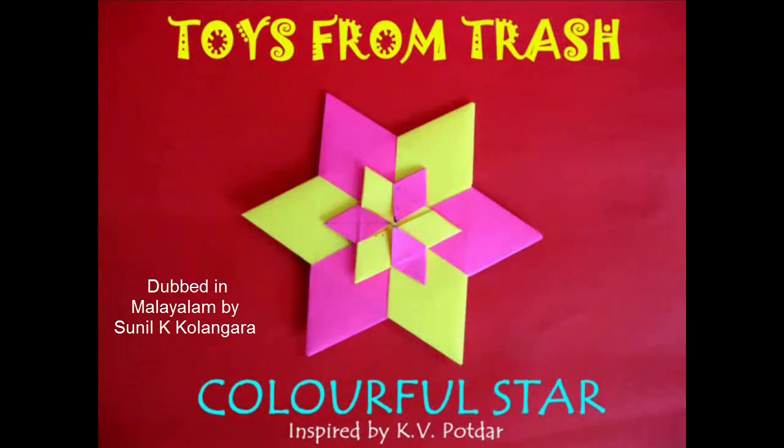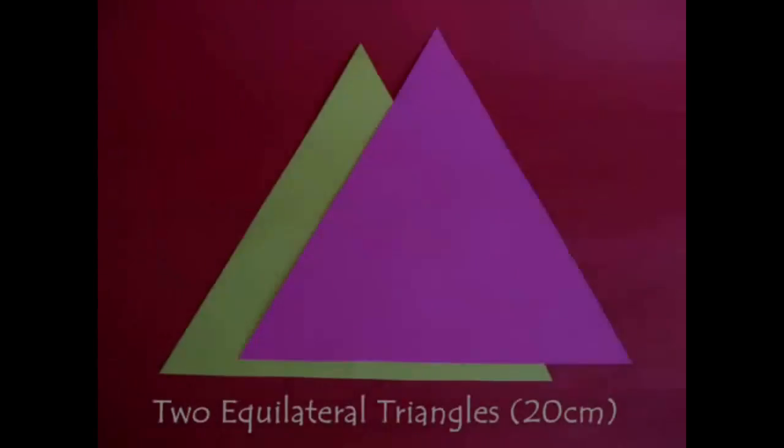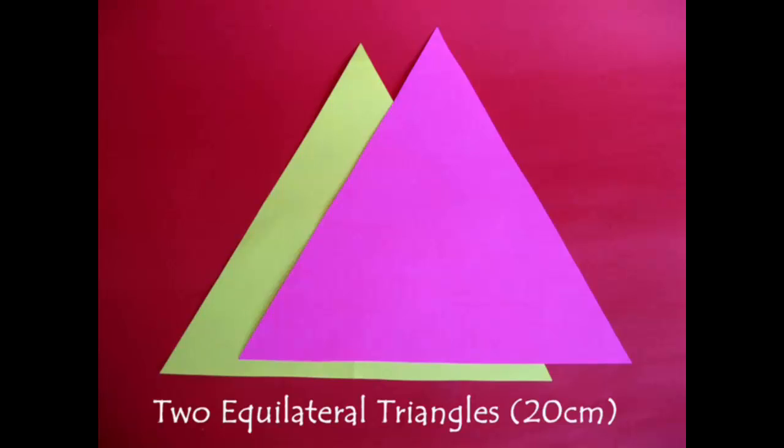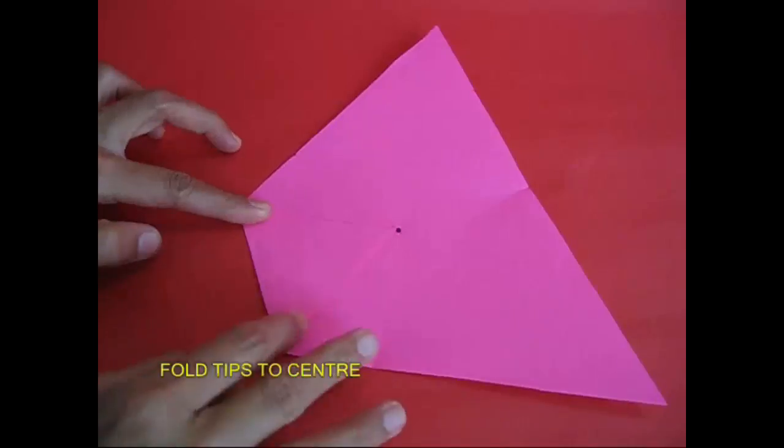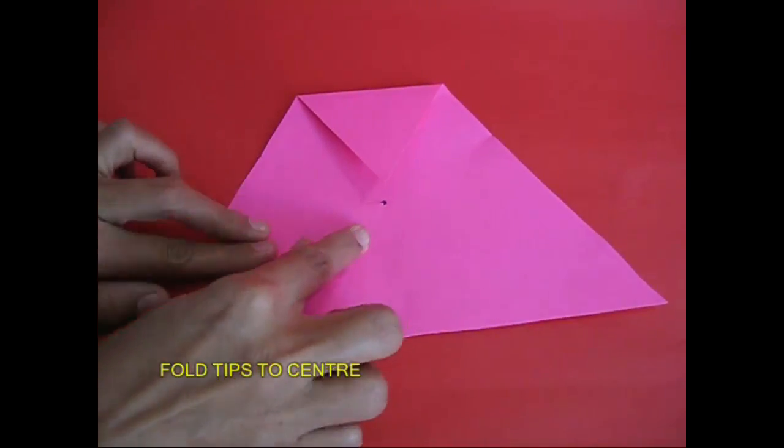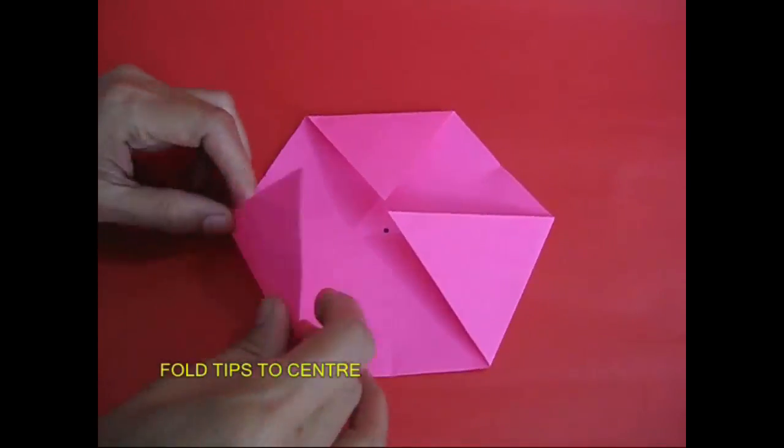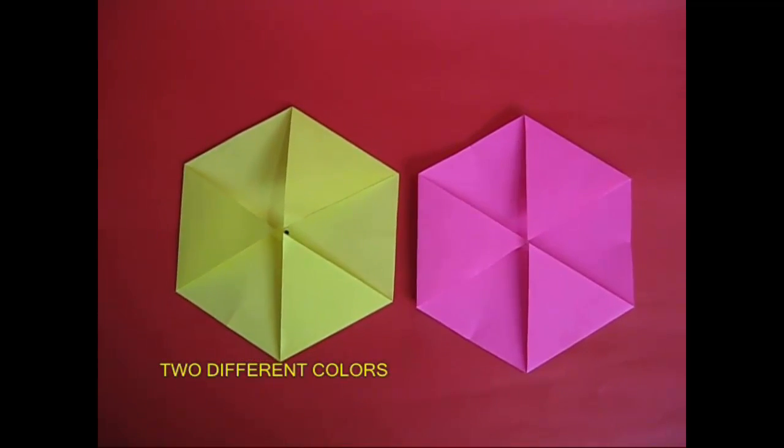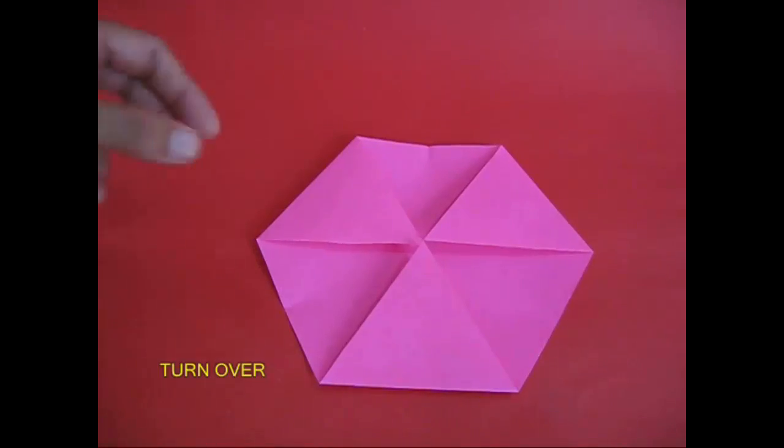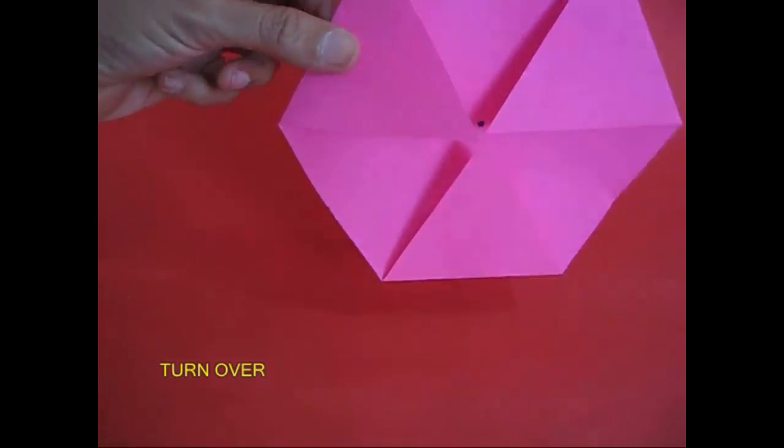This is a colorful star. It's equal to 20cm, a small size. It's a hexagonal shape. Actually, it's not a hexagonal shape. It's green and pink.